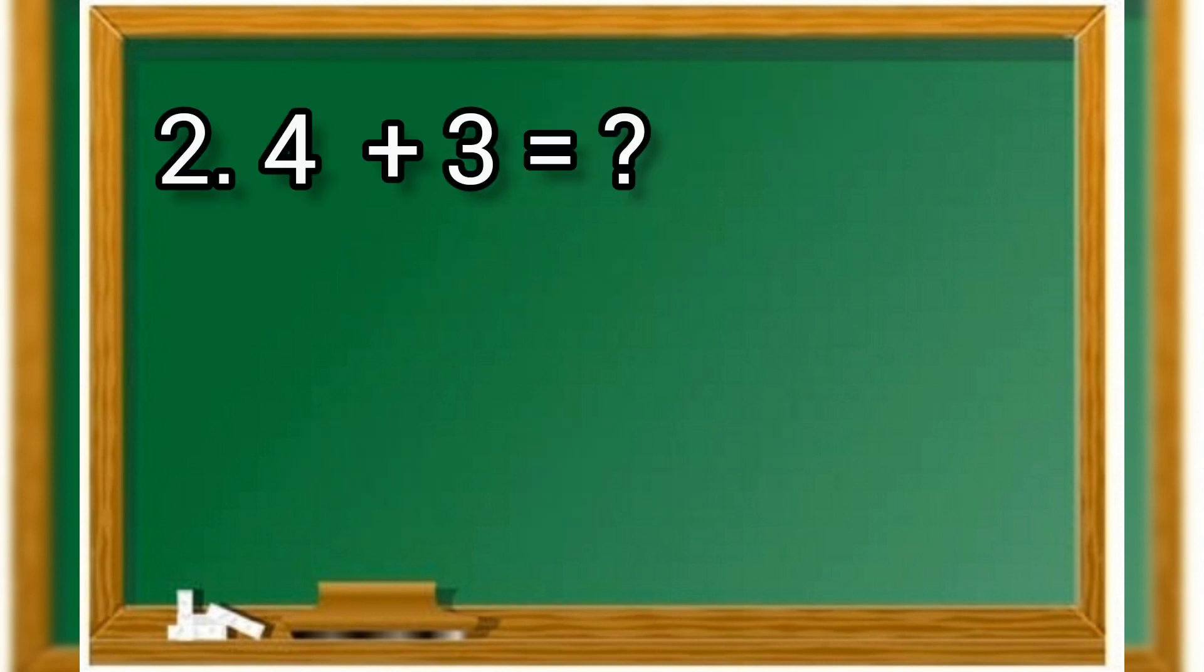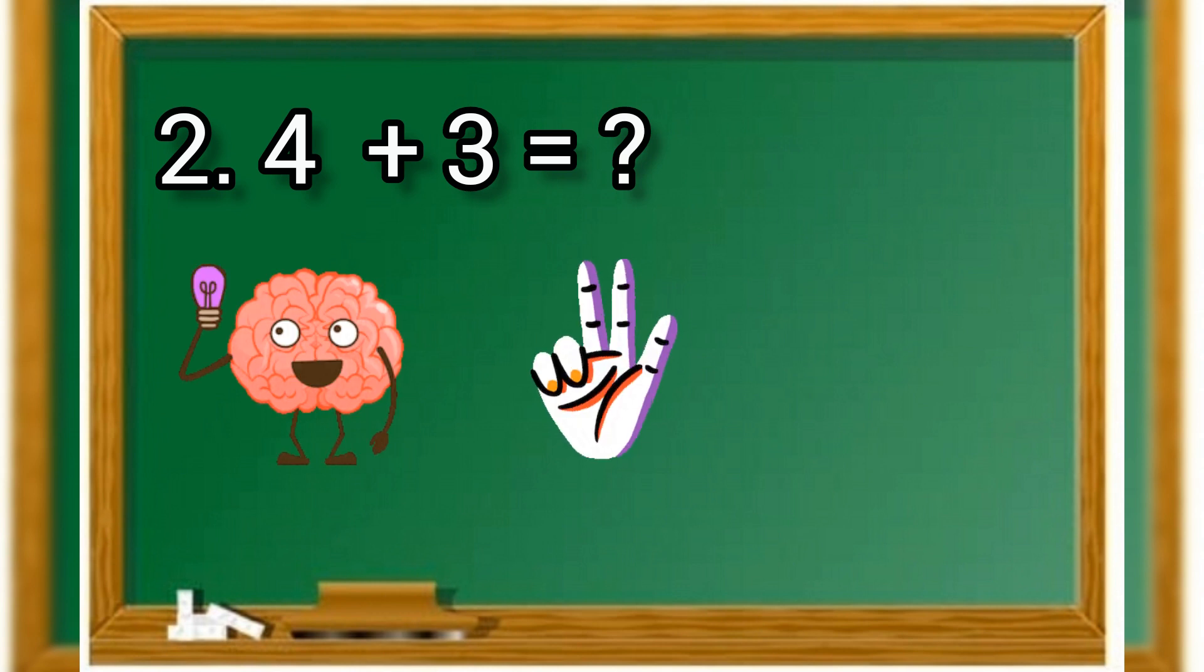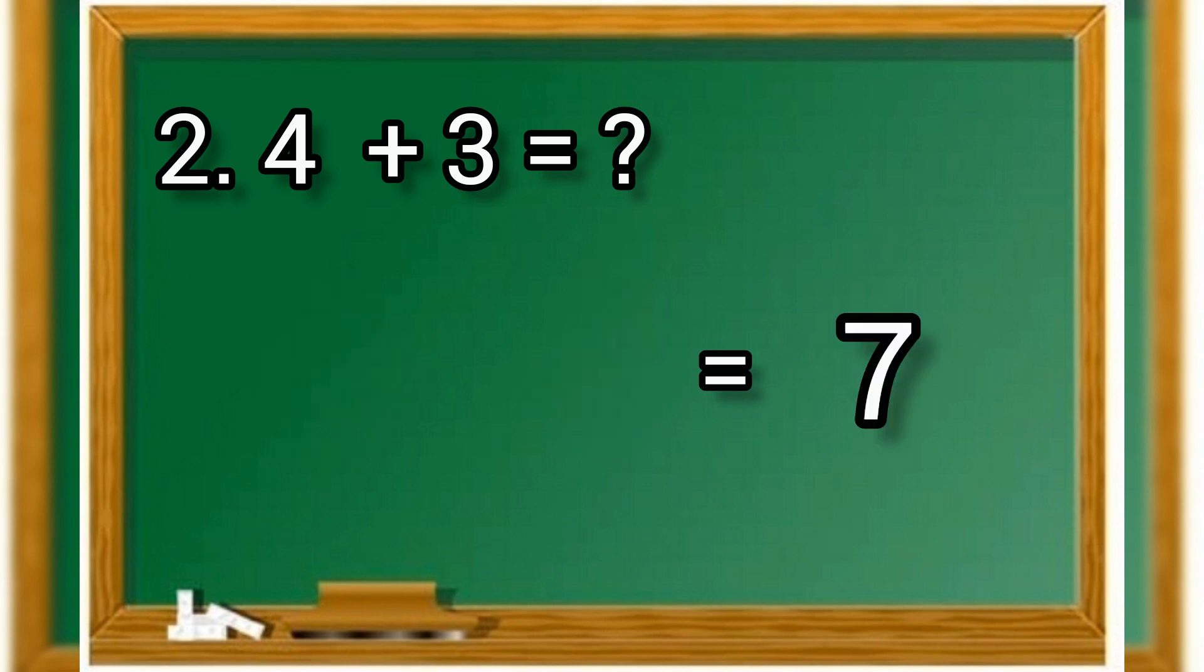Let us try with one more example: 4 plus 3. So we have to keep 4 in mind and 3 in fingers. 4 in mind, after 4 it's 5, 6, 7. The answer is 7. Very good.